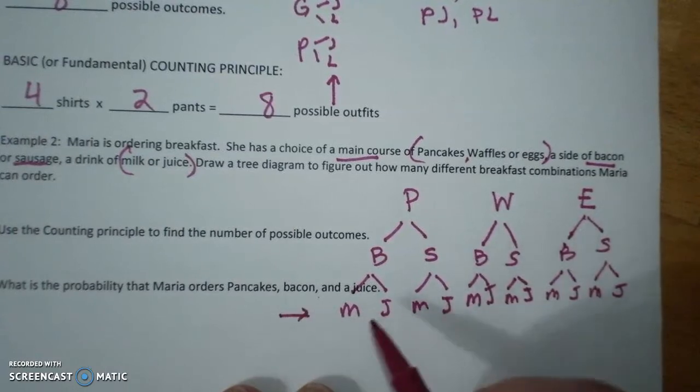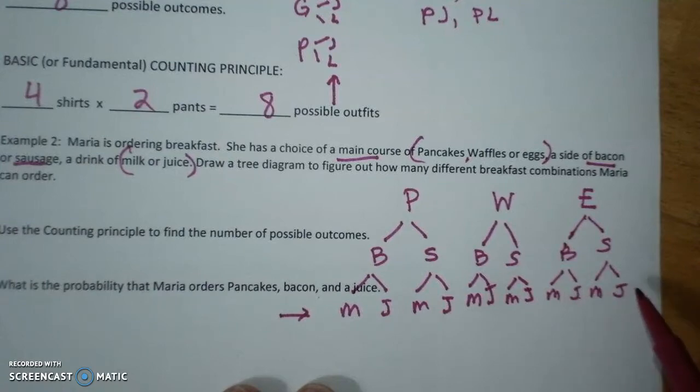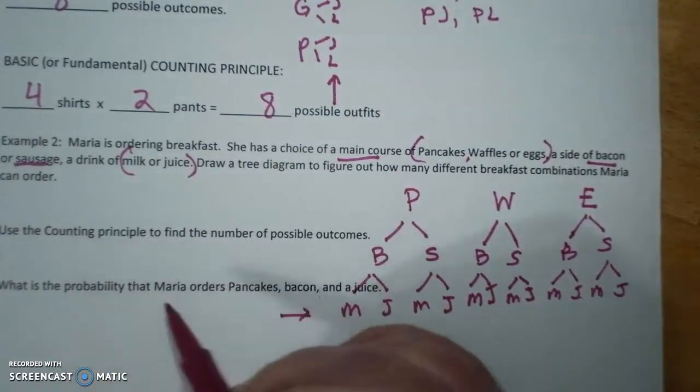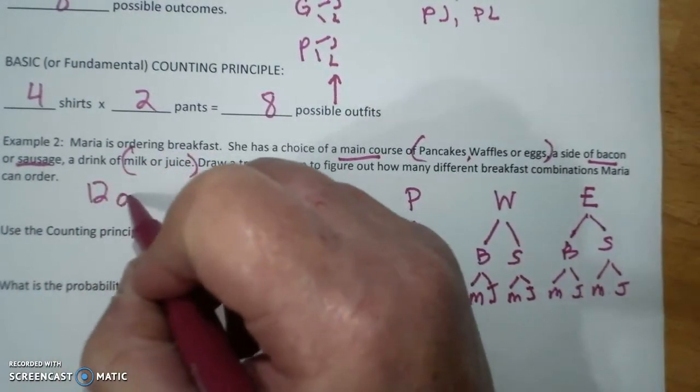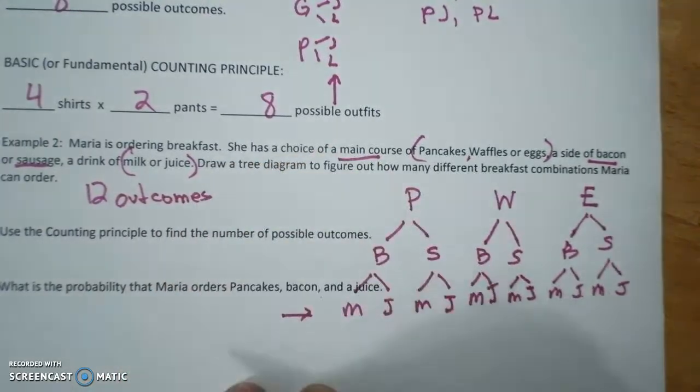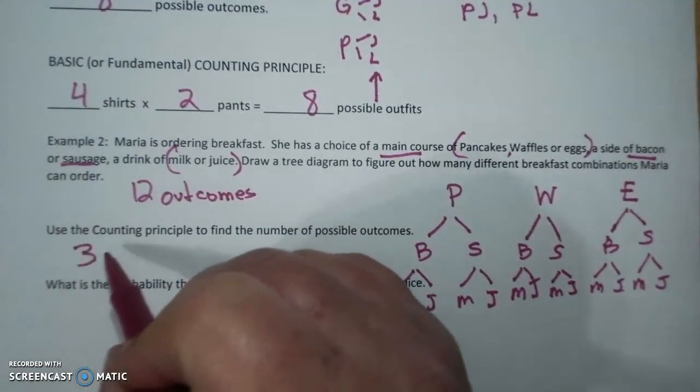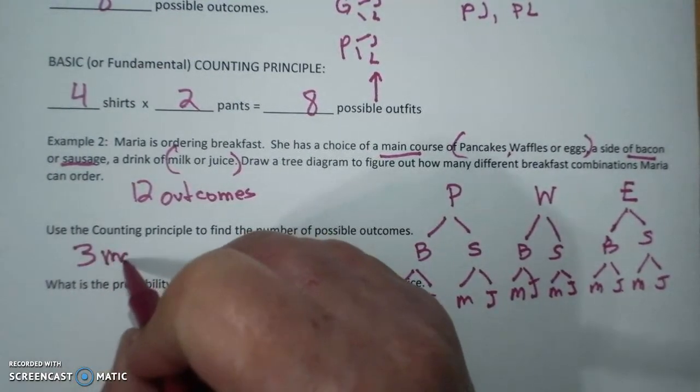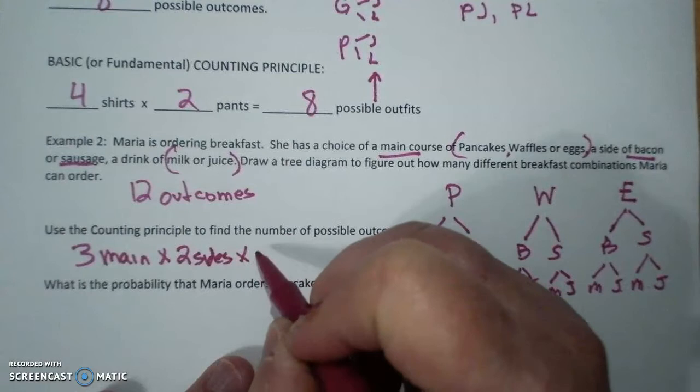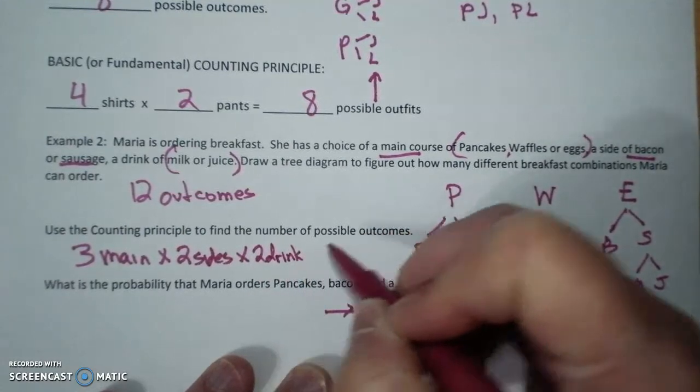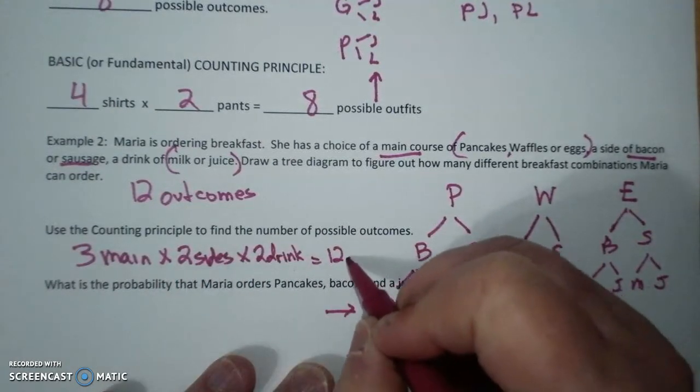To find your total possible, you count here. 1, 2, 3, 4, 5, 6, 7, 8, 10, 11, 12. Use the counting principle. 3 main times 2 sides times 2 drinks equals 3 times 2 is 6. 6 times 2 is 12 outcomes.